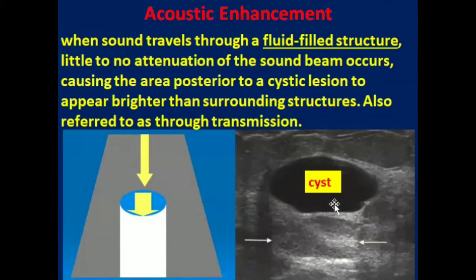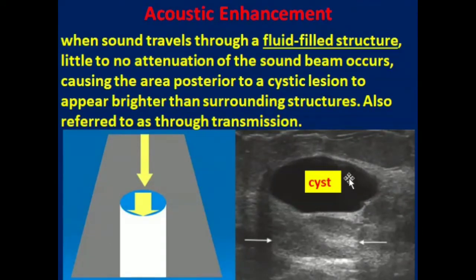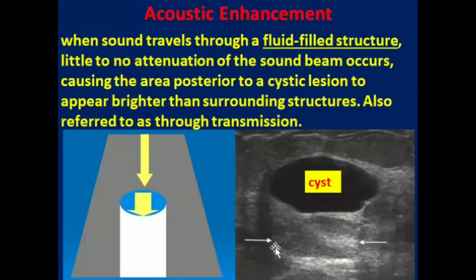This is a cystic lesion located within solid tissue. As the beam passes through this fluid-filled cyst, there is no attenuation, and whenever it hits the posterior wall there will be enhancement. In this image we can clearly appreciate the presence of posterior enhancement.